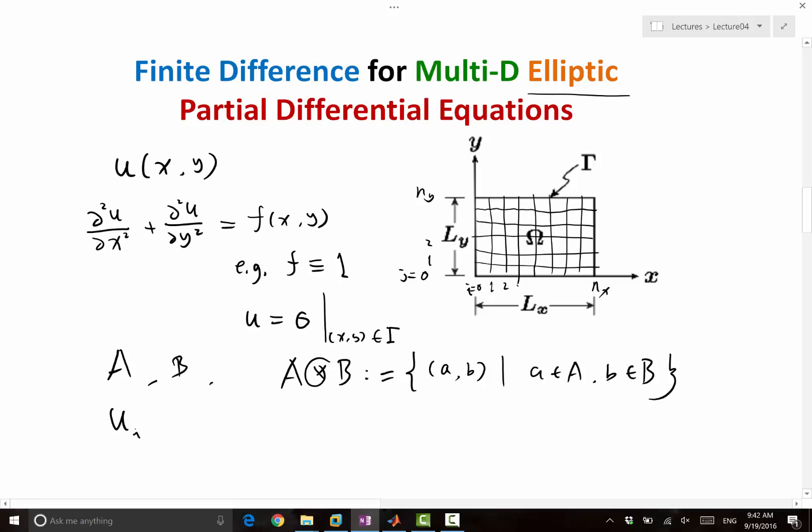So u of ij with two subscripts are used to denote the solution u at xi and yj. Similarly, f of ij is used to denote the function f at xi and yj. So with this, u ij and f ij, we discretize the functions. And next thing is we need to discretize the differential operators by approximating them using only u ijs without having to access the solution in between the discrete points.